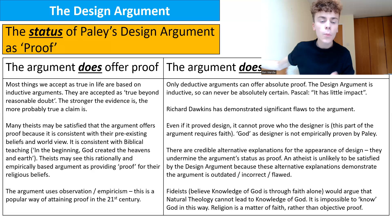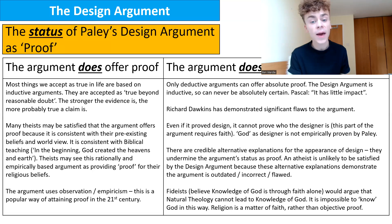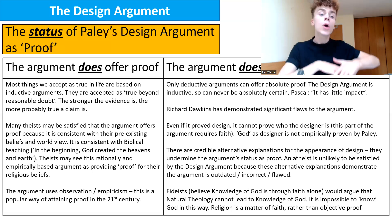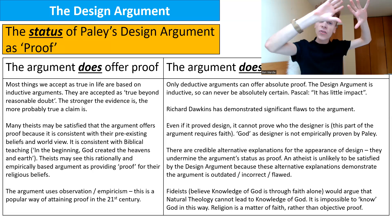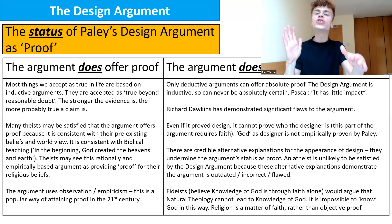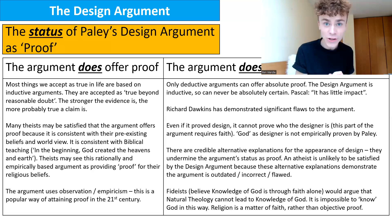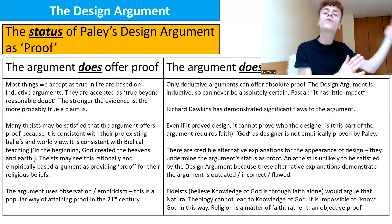There are credible alternative explanations that undermine the argument's status as proof. When alternative explanations arise, the strength of evidence is diluted. An atheist is unlikely to be satisfied, as these alternatives demonstrate the argument is outdated and flawed. If you don't already have religious belief, this argument is not likely to persuade you, because there are too many alternative explanations. Whereas if you already operate within the religious form of life, you may be more likely to accept this argument, as it confirms your pre-existing beliefs.